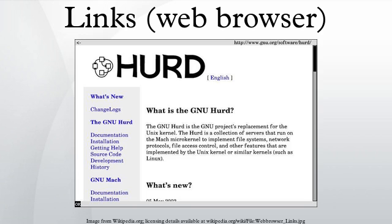Lynx is an open source text and graphic web browser with a pull-down menu system. It renders complex pages, has partial HTML 4.0 support, supports color and monochrome terminals and allows horizontal scrolling. It is intended for users who want to retain many typical elements of graphical user interfaces in a text-only environment.